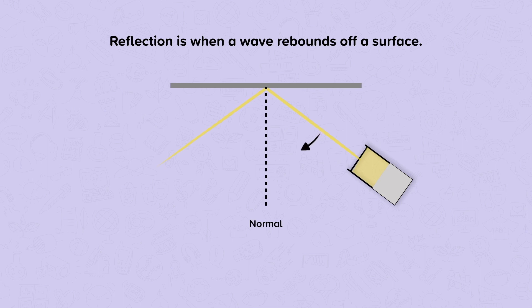So this is our angle of incidence, from the ray to the normal. And this is our angle of reflection. But how do they compare?